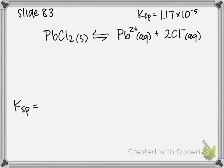The reactant is a solid, so we're not going to include it in the equilibrium expression. Remember, we don't include solids or liquids. So Ksp is going to be equal to lead 2 plus concentration times Cl minus, and that's going to be squared because of that coefficient 2 up above.